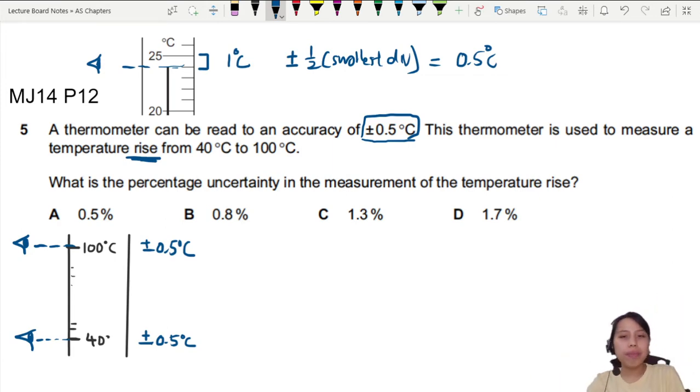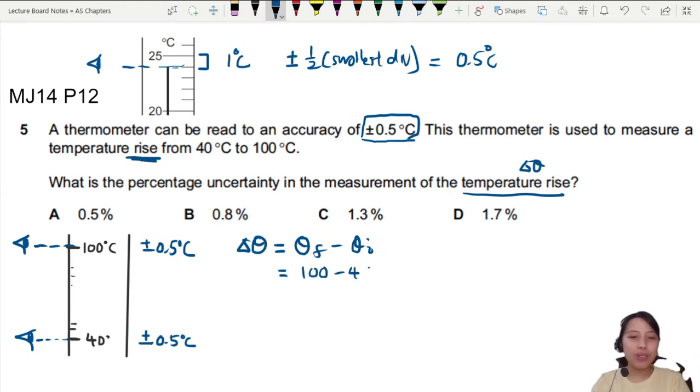So if you want to find at the end of the day what's the percentage of uncertainty, we got to say, all right, this is a temperature rise, so it's like a change in temperature. So if I say, all right, change in temperature is going to be, let's take final minus initial. So we have, this is our equation, 100 minus 40. This will give us 60 Celsius change in temperature going from low to high. So delta theta.